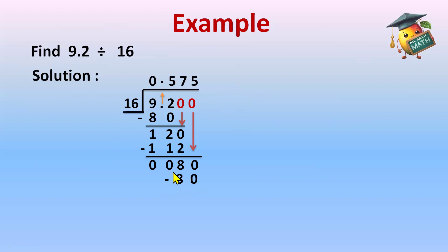Now, 16 into 5 is 80, and we can do the subtraction. 80 minus 80 is 0. We have the remainder 0.